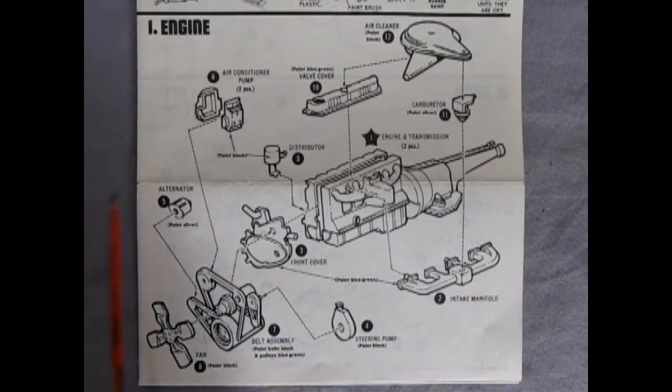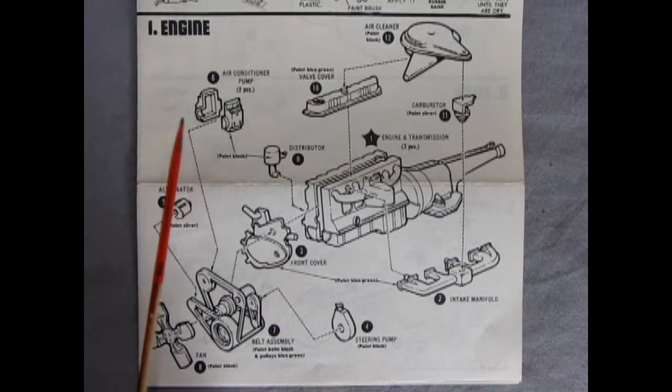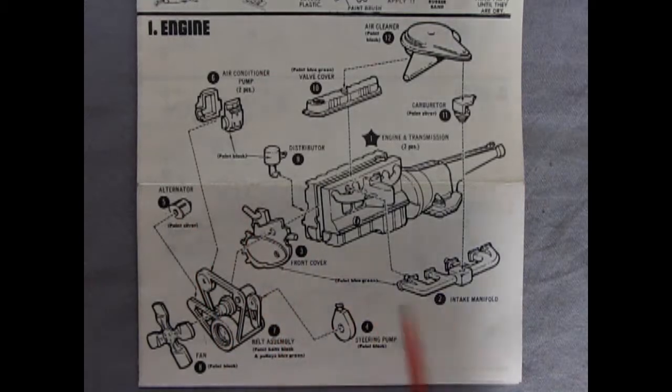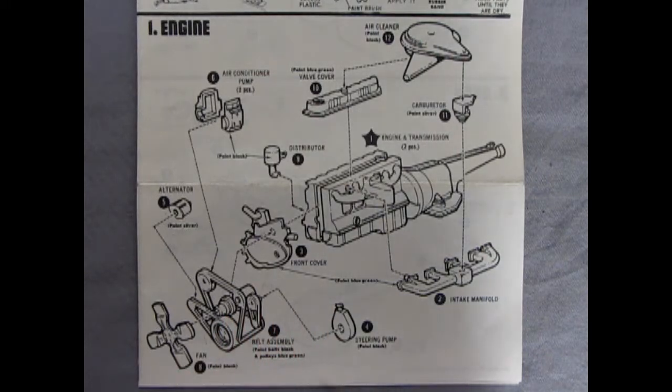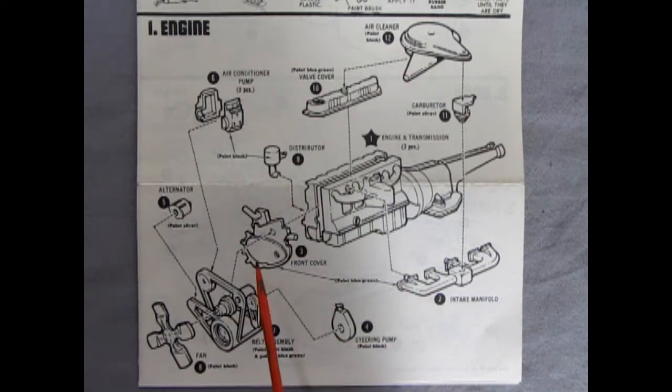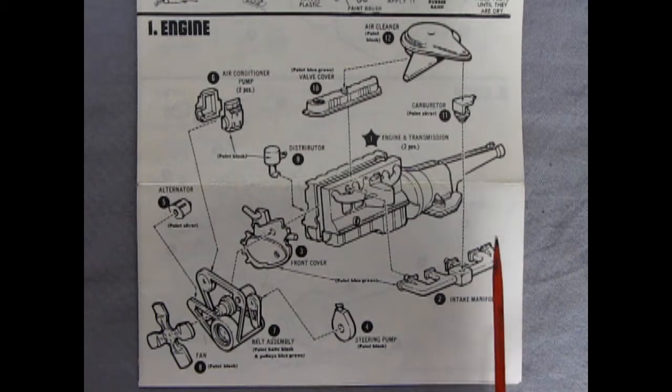Down here we've got our tools for what we need to build this kit. Our first panel shows our engine going together. Here we've got an air conditioner pump alternator. We've got our big belt assembly which you're going to see in the parts which is really crazy actually. Then we've got our fan and our steering pump, the front engine cover, intake manifold.